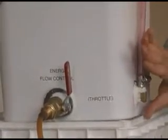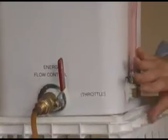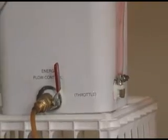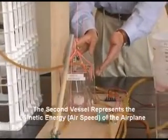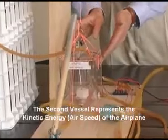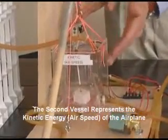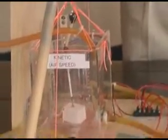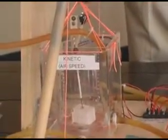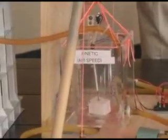In this case, the energy or the representation of energy in this fluid is released into a second vessel, which has a graduated scale that represents the kinetic energy or airspeed of the airplane. Now, if I ask my assistant to step into the frame, we can see that the second vessel can be controlled by a control stick.